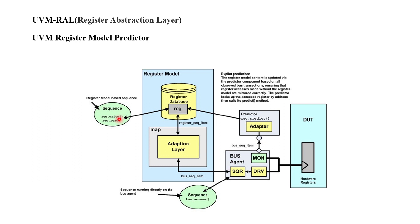The register sequence is converted into a bus sequence, and the driver drives the bus sequence to the DUT via the sequencer. The monitor captures this information and broadcasts it to multiple components — such as the predictor, reference model, coverage collector, and scoreboard — via the analysis port. The predictor has an inbuilt analysis export and an adapter, which converts the bus sequence back into a register sequence, and with that the register database is updated.